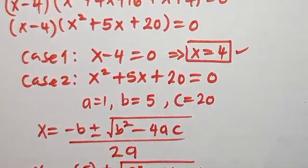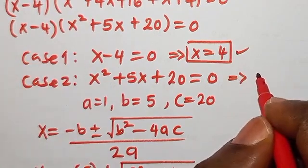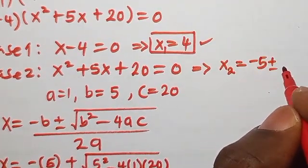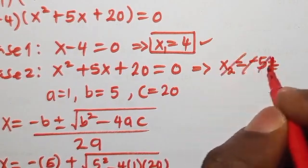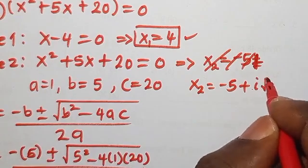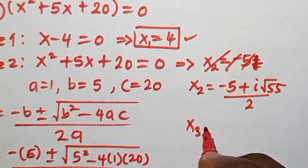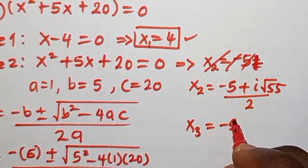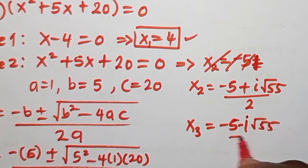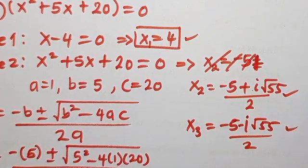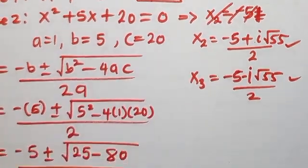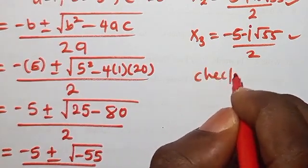So we have three possible solutions. x₁ = 4, x₂ = (-5 + i√55) / 2, and x₃ = (-5 - i√55) / 2.